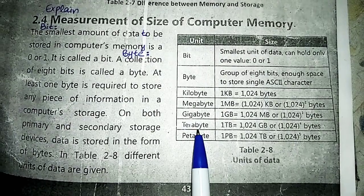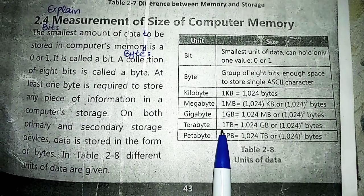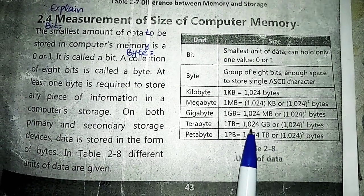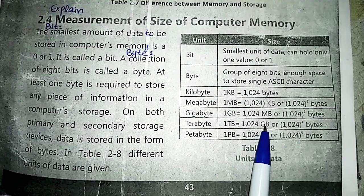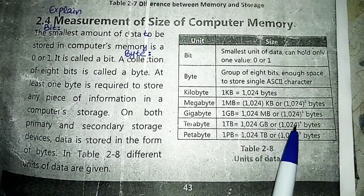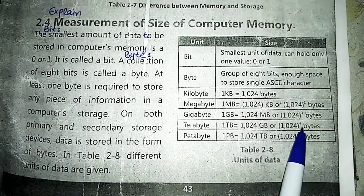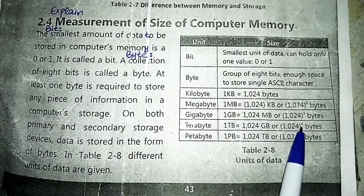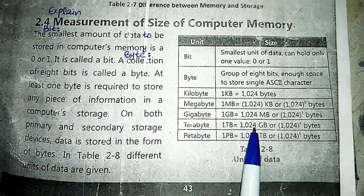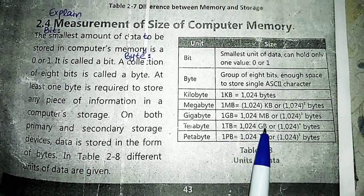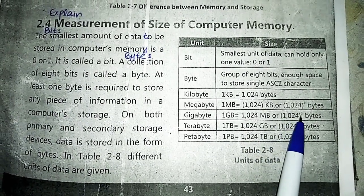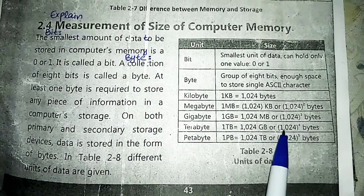Next is terabyte. Terabyte is represented by TB. It is equal to 1,024 gigabytes, which equals 1,024 power 4 bytes. Since gigabyte was expressed as 1,024 power 3, multiplying by 1,024 gives power 4.